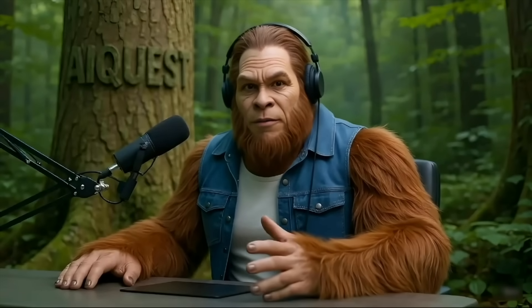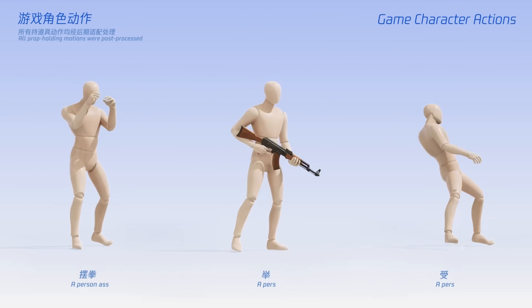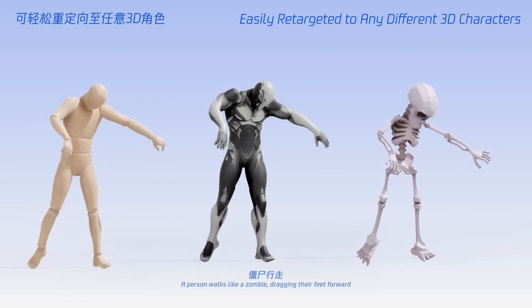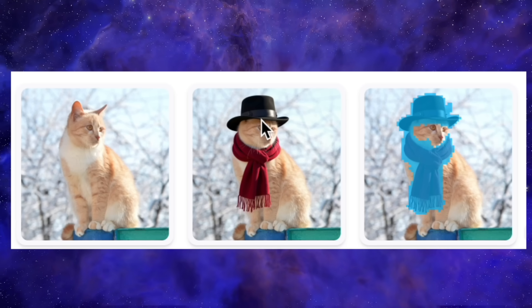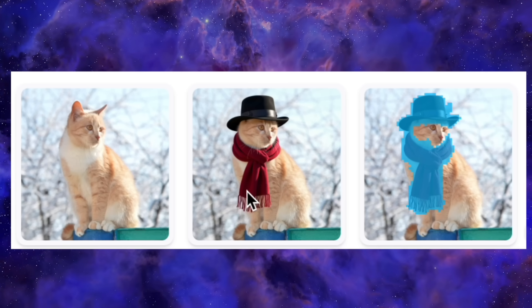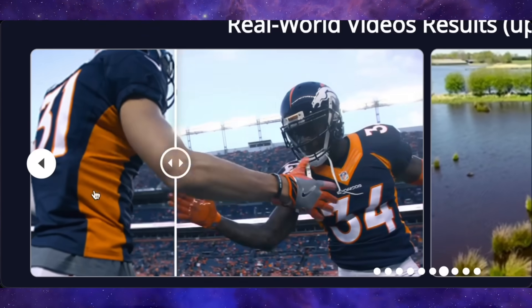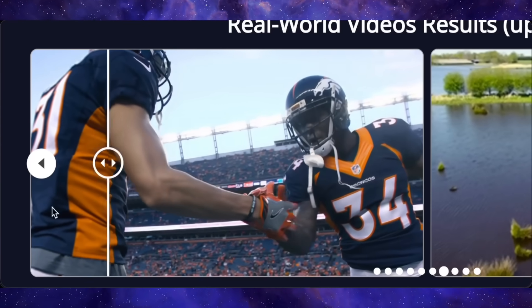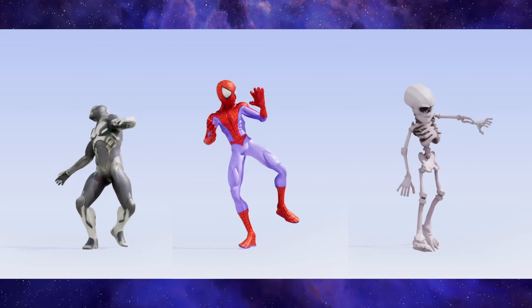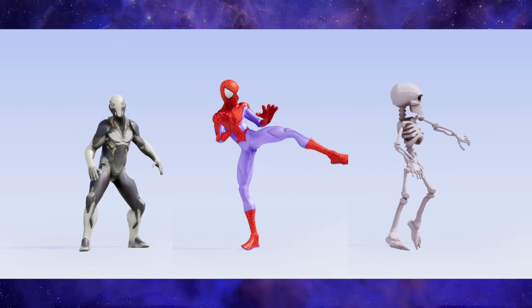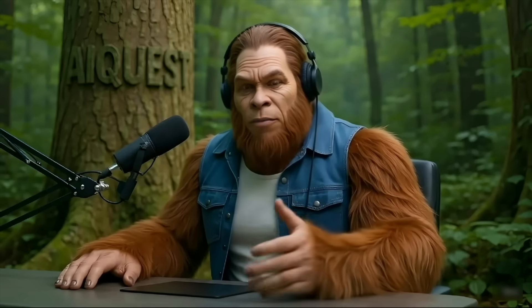I'm here again with some fresh AI tool releases, and these ones are pretty wild. We've got a tool that lets you edit only specific parts of an image while leaving everything else pixel-perfect untouched. We've got another one that upscales videos in real-time. We've got a third tool that generates talking head avatars live at 24 frames per second for real-time video calls and streaming. And we've got another tool that generates 3D character animations from text prompts. Let's jump right in.